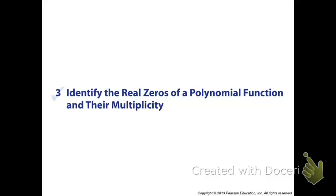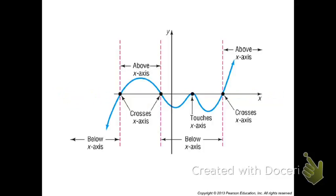For this part of the lesson, we're going to be taking a look at polynomial functions and their graphs, specifically the real zeros. As you look at this graph, we can see that the graph touches or crosses the x-axis one, two, three, four times. So in this graph, we have four real zeros — the graph either touches or crosses the x-axis at four different spots.